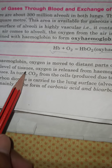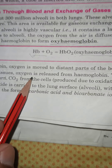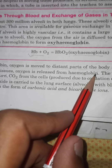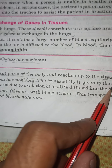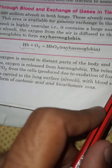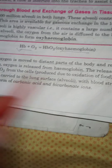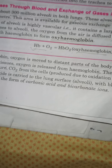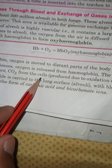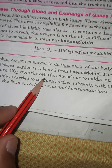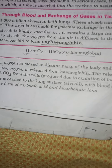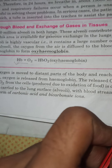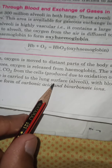When the blood reaches the level of the tissues, the oxygen is released from hemoglobin. The released oxygen is given to the cells of the tissues. The cells use this oxygen to oxidize food, producing energy. Carbon dioxide is produced and is infused back into the blood.